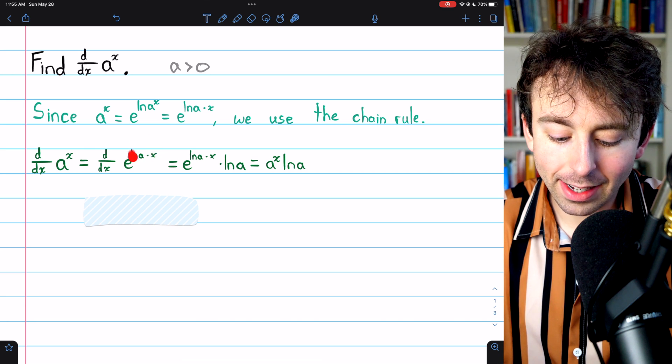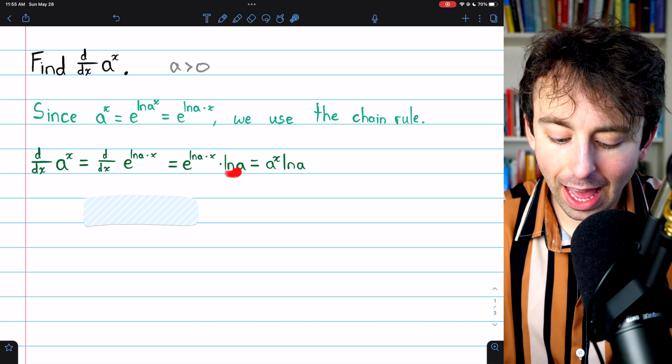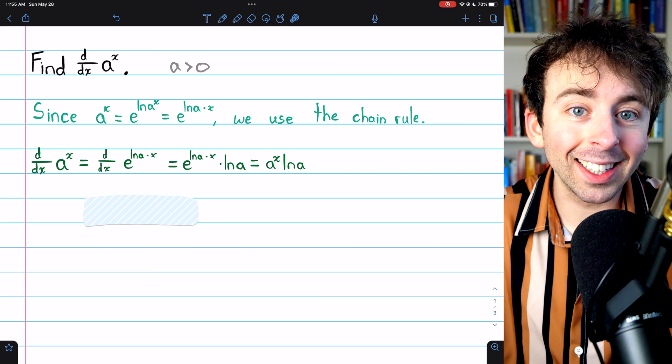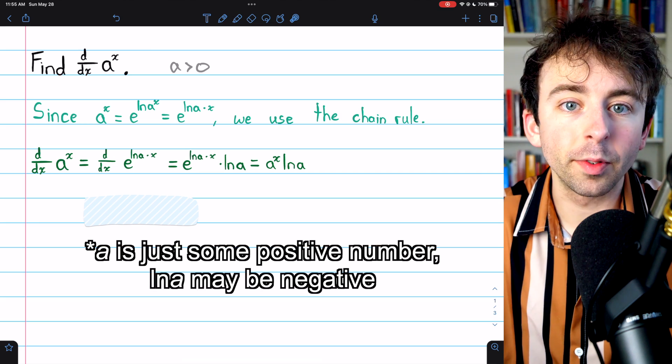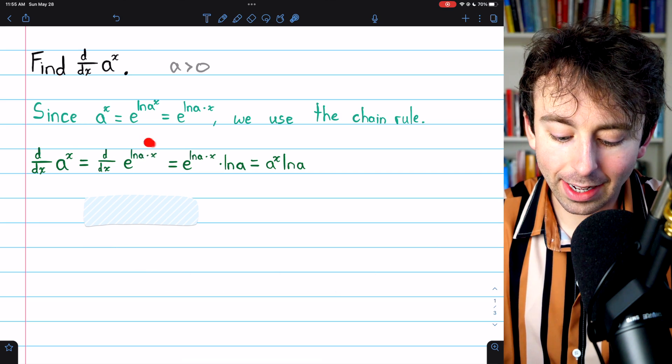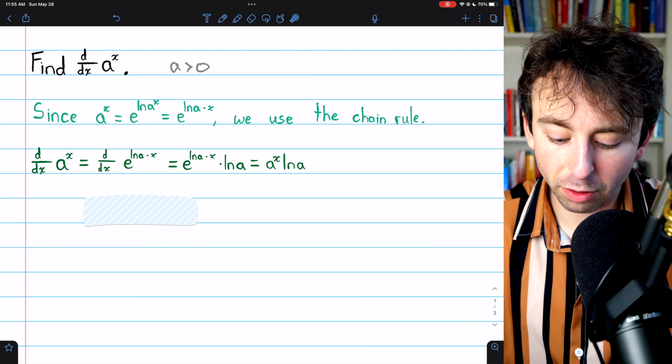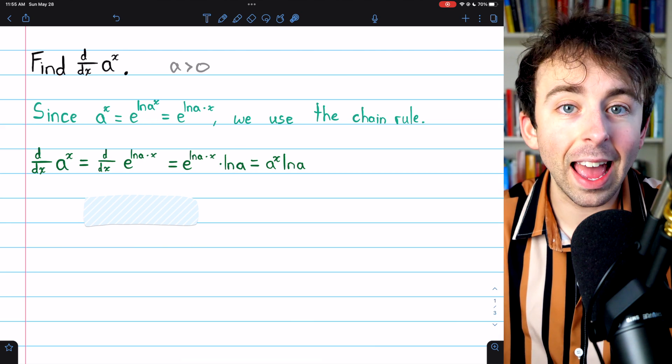The derivative of ln a times x is just ln a because remember ln a is just some positive number. So ln a times x, the derivative will just be the coefficient, which is ln a.